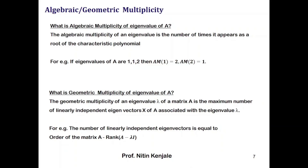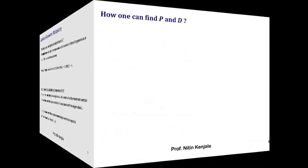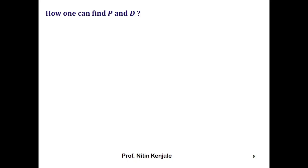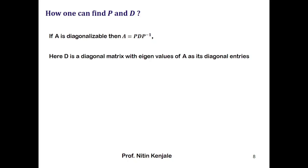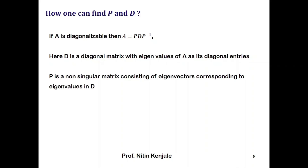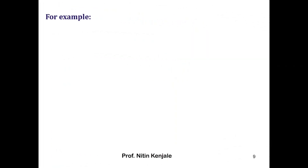Now let us see how, if A is diagonalizable, we find the invertible matrix P and the diagonal matrix D. We know A can be written as P D P-inverse. D is obtained by placing the eigenvalues of A along its diagonal with all other entries zero, whereas P is obtained by taking the corresponding eigenvectors of A and placing them along the columns of P.